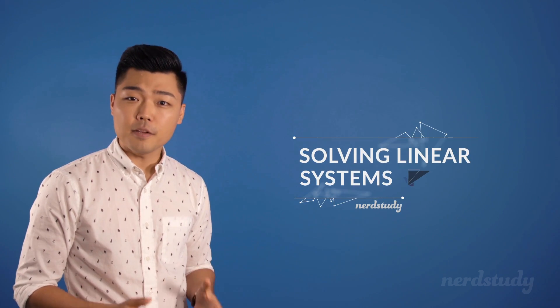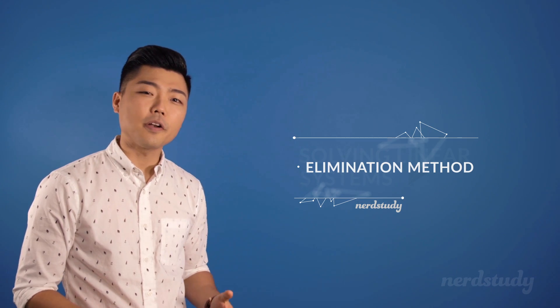Consider that you've got two lines on a graph that intersect each other at a certain point. In this video we're going to use the elimination method to find out the coordinates of the point of intersection.